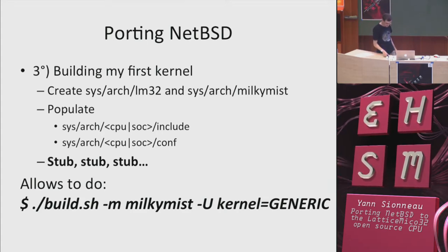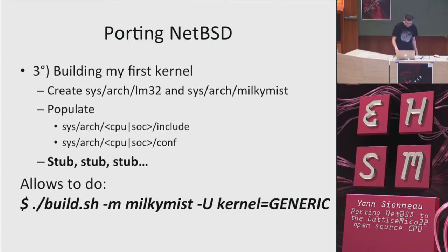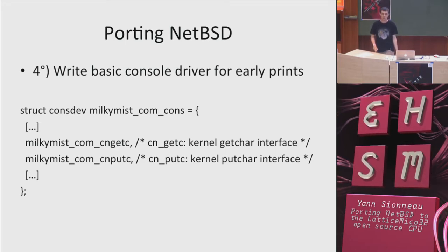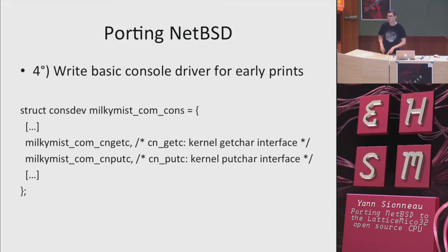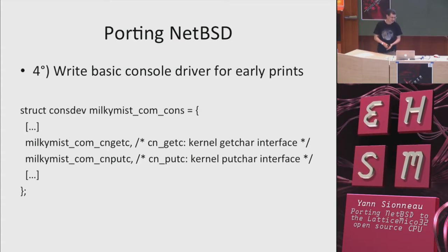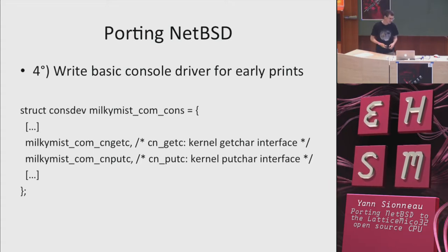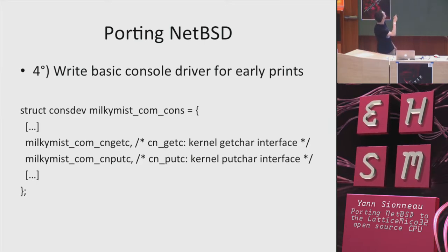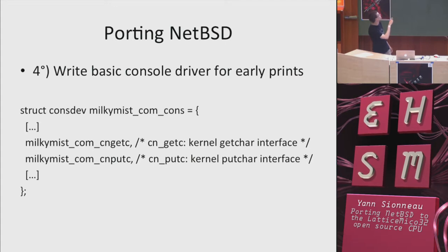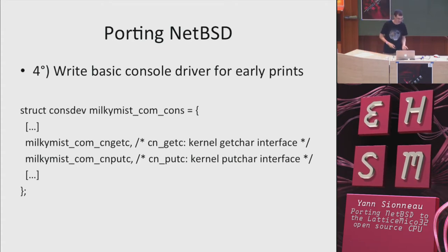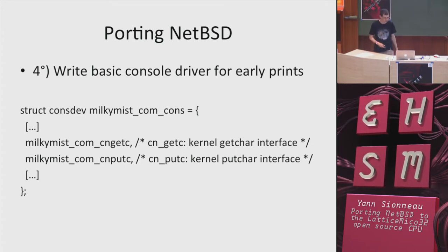When writing kernel code you want to be able to print debug output. The first thing to write is the console driver. It's straightforward: declare a C structure containing function pointers — one for getc (reading from the console) and one for putc (writing to the console). Once written, you use it later in initialization.